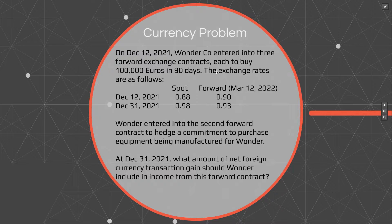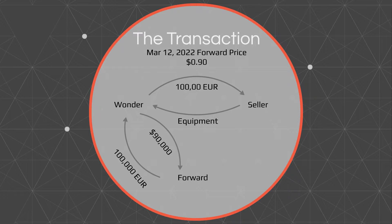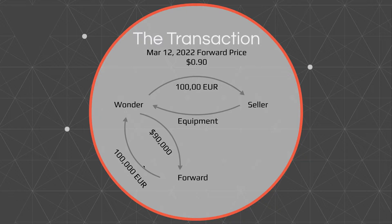Wonder Company locked in the price of euros at December 12th at 0.90, to be transacted at March 12th, 2022. At a high level, Wonder Company will pay 0.90 — which works out to $90,000 — in exchange for the hundred thousand euros. They locked this in at December 12th, removing the risk of paying a different amount based on foreign currency exchange rate fluctuations. They remove volatility.